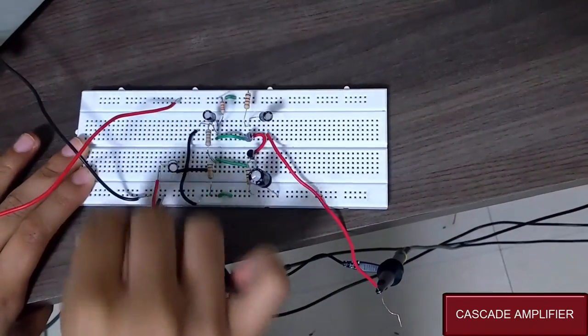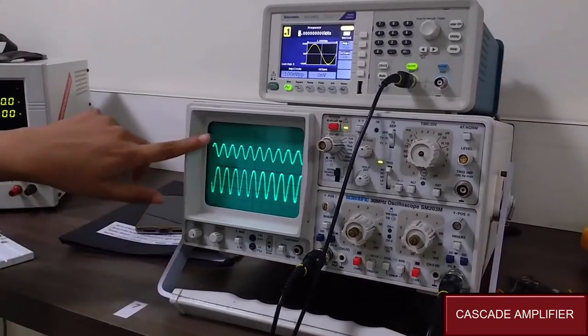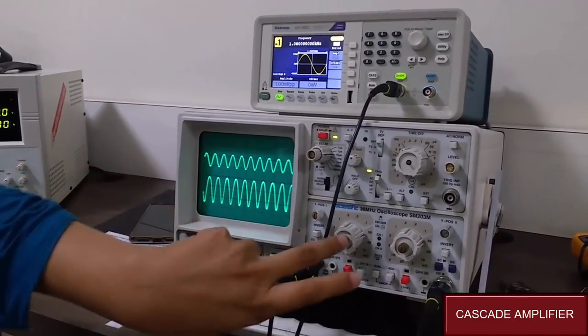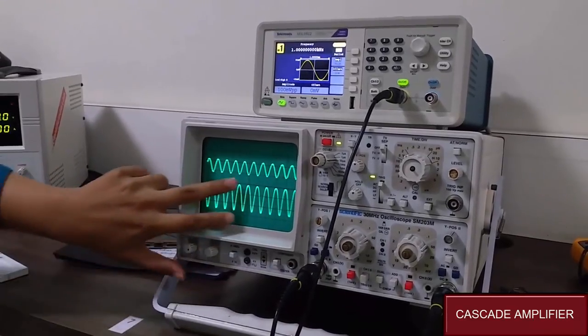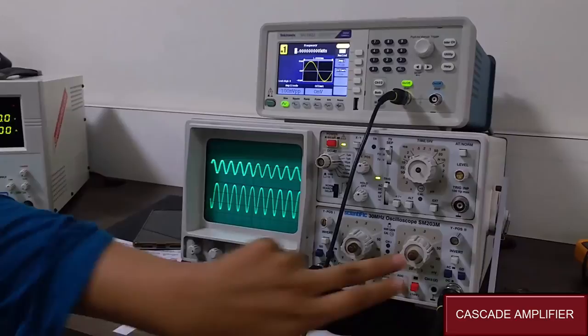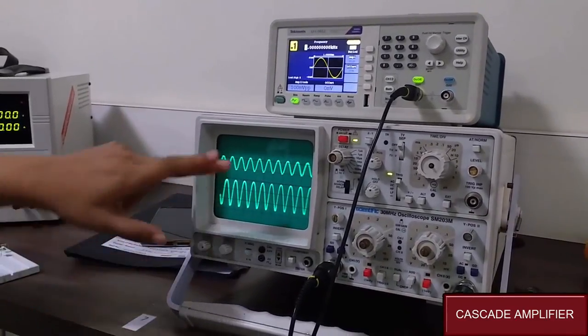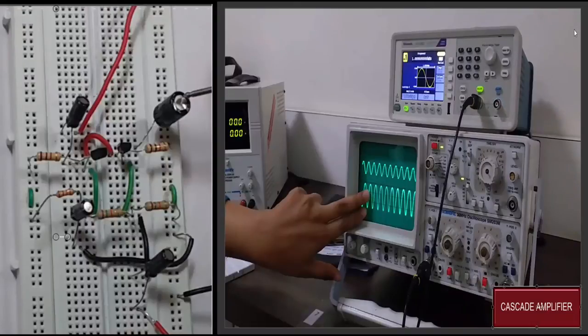Now let's see the output. This is the output obtained. This is the input—you can see it is 50 millivolts. And this is 2.8 times 50, which is 140 millivolts. So you can easily see that the input is amplified. This is all about the cascade amplifier.